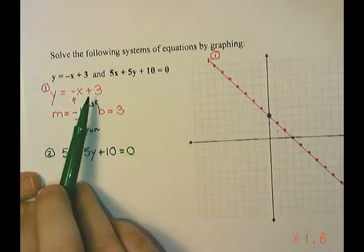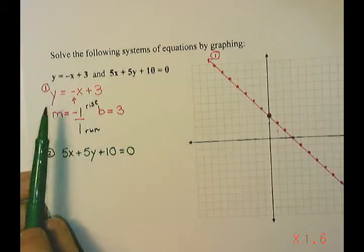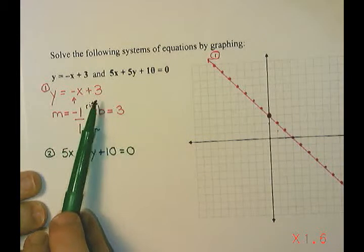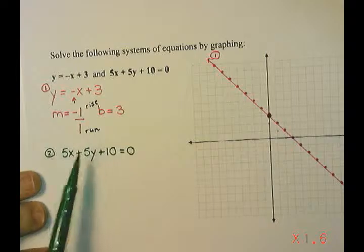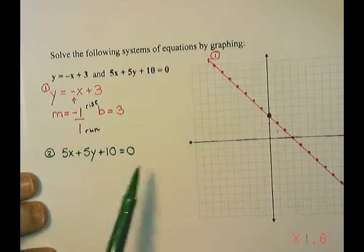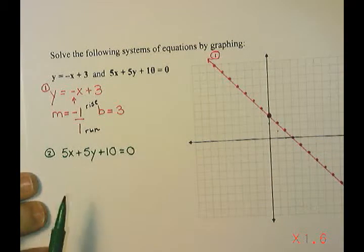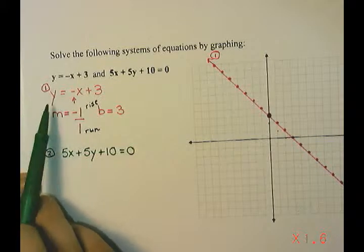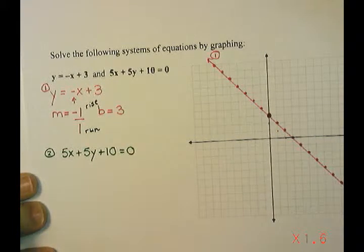Now this one looks a little different from this one, it's not in the same form. So this one was in what we call slope y-intercept form, which is really good for graphing, and this one here is in standard form, which is not so good for graphing. So what I want to do is isolate y to get that all by itself.